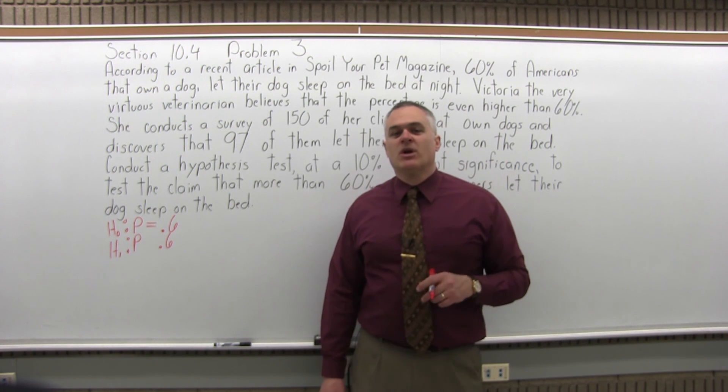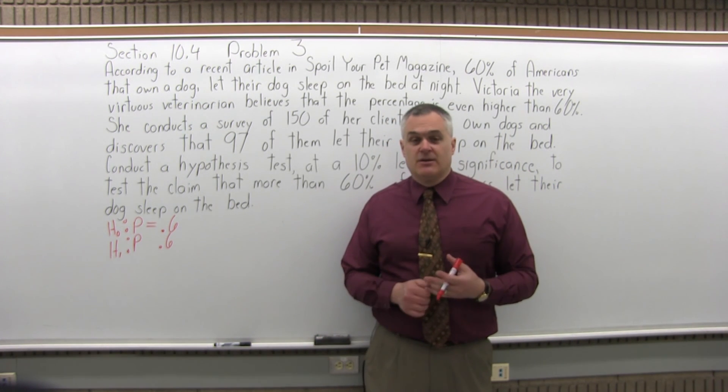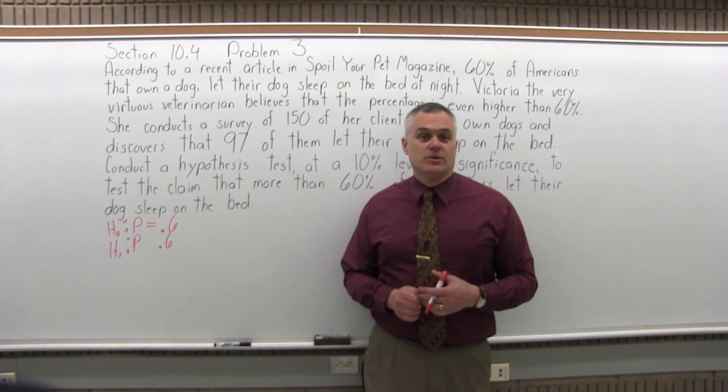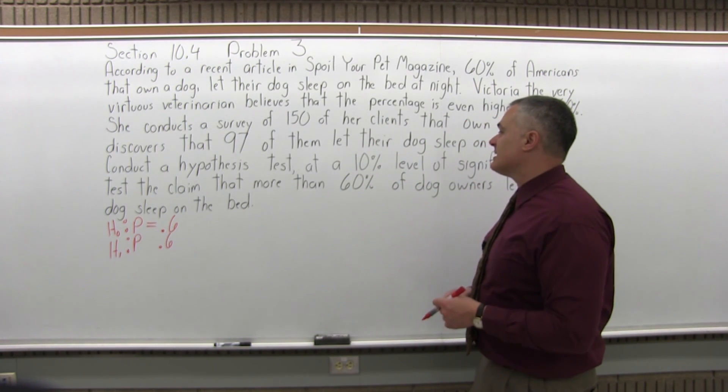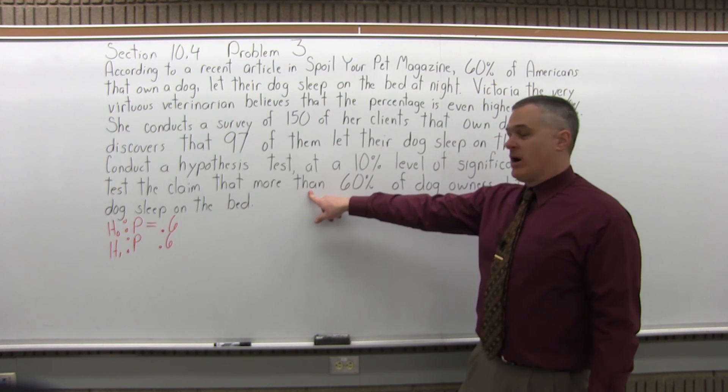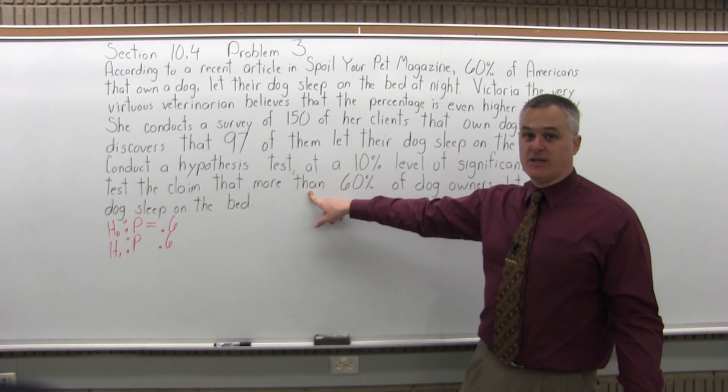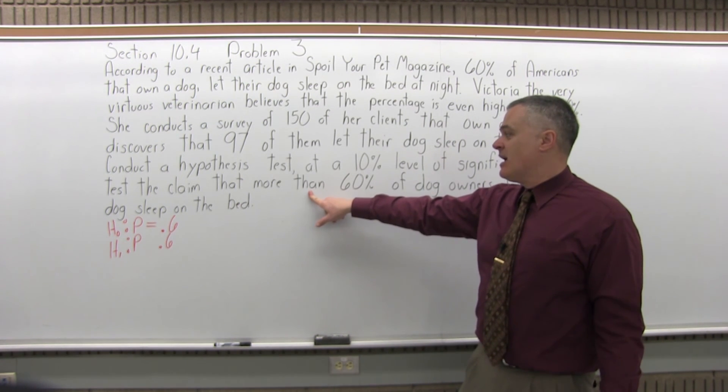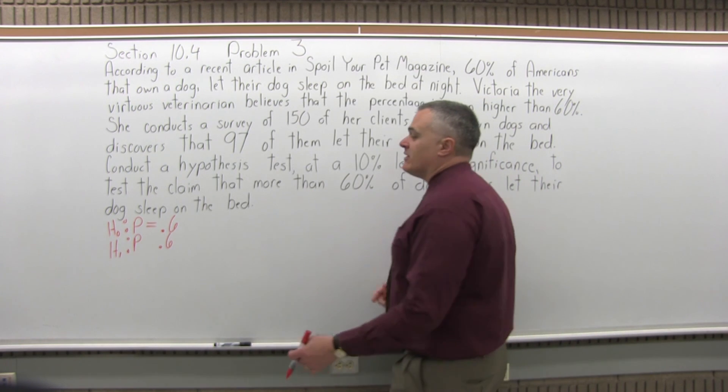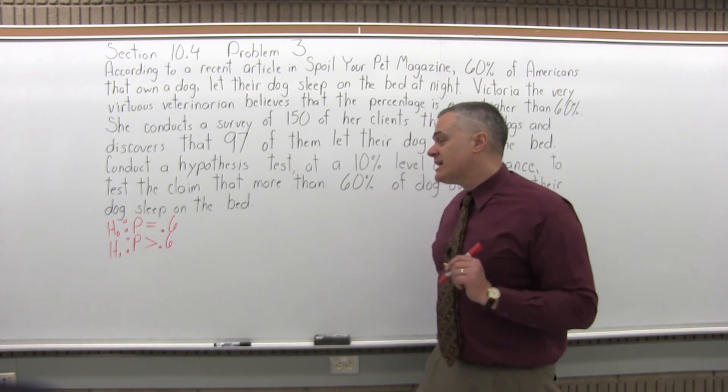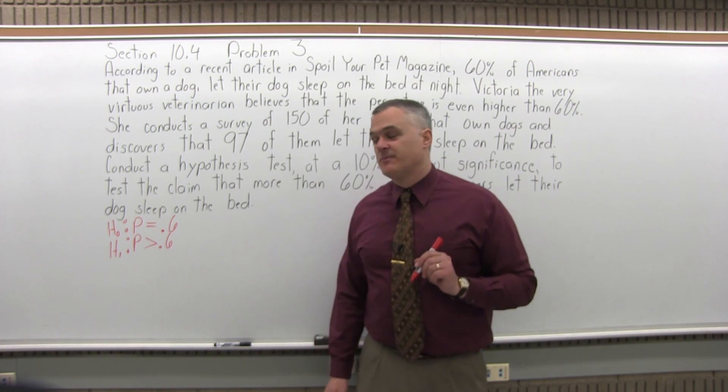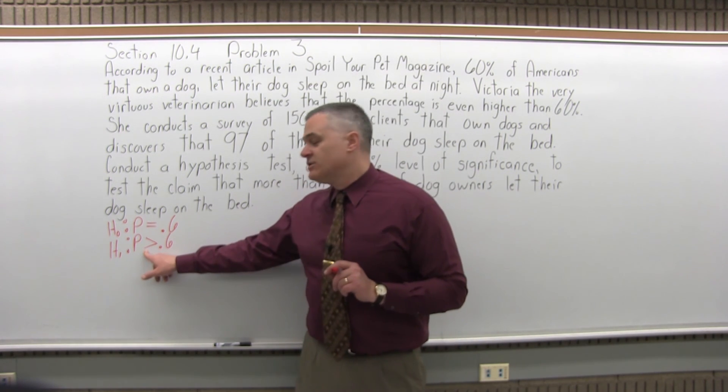It won't be the equal sign this time. It'll have either a less than, a greater than, or a not equal to, depending on what we're testing. In this case, we want to test the claim that more than 60% of the people let their dogs sleep on the bed with them at night. More than would be a greater than. You want to test the hypothesis that the percentage is actually greater than 60%, not greater than or equal to, just greater than.